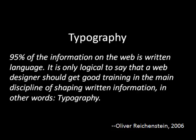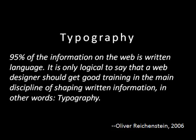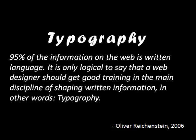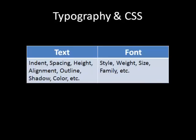For example, we could change the size of the text, change the spacing between the letters, or change the font, and of course our favorite — change the color. When you think of CSS, the styles are grouped into basically two main categories: you're either going to be stylizing the raw text or you're going to be stylizing the font. When stylizing the text, you can change things like indent, spacing, height, alignment, outline, shadow, and color. And in terms of font, you can change the style, the weight, the size, and so on.